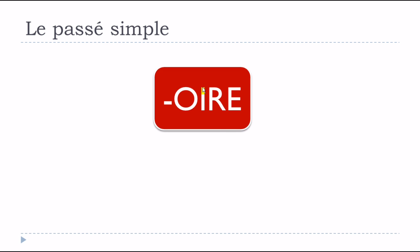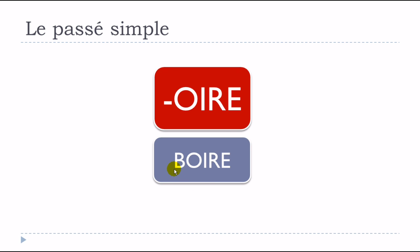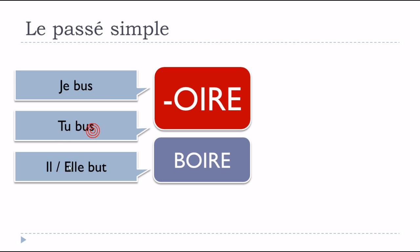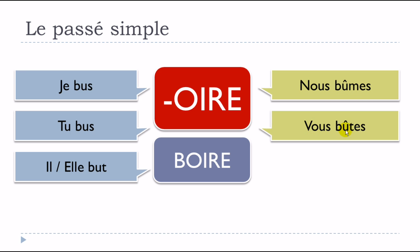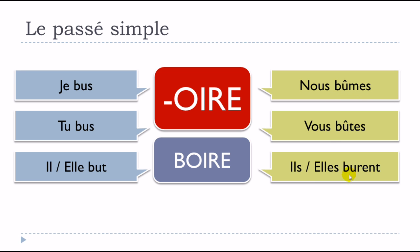And verbs ending with OIRE — example: BOIRE, to drink. Je bus, tu bus, il but, elle but, nous bûmes, vous bûtes, ils burent, elles burent.